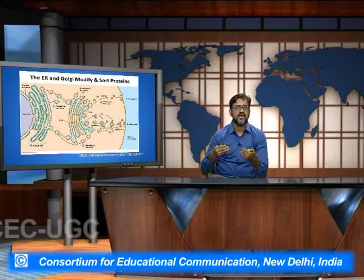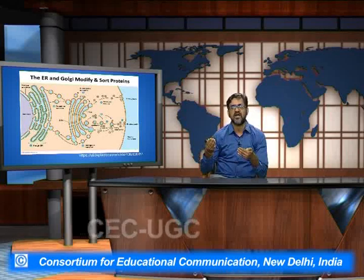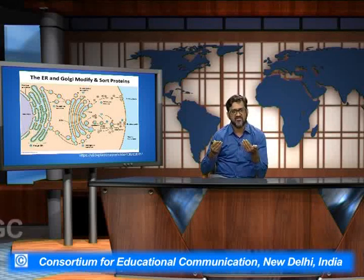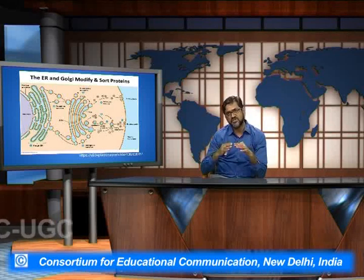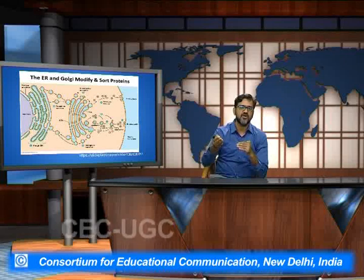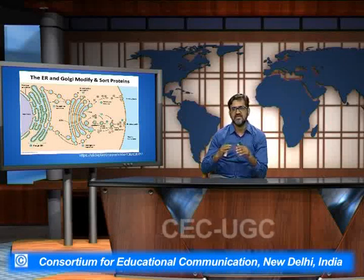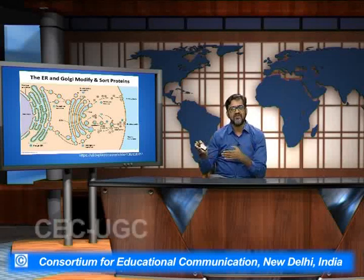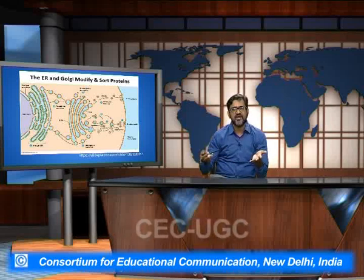Some of the proteins form the intracellular channels and are exported onto the surface of the cells, some form receptor molecules and are transported onto the membrane of the cells. This is how exactly protein sorting is taking place with the help of the endoplasmic reticulum, Golgi, and the various vesicles which play a very important role in the transportation of these protein molecules.